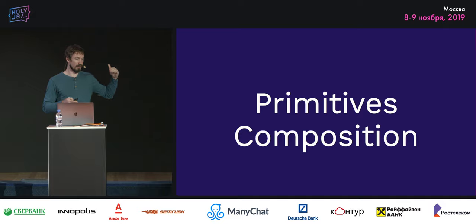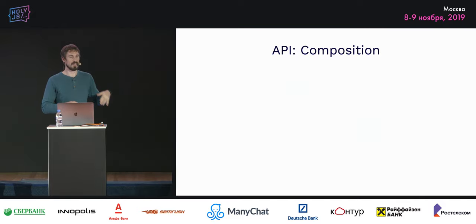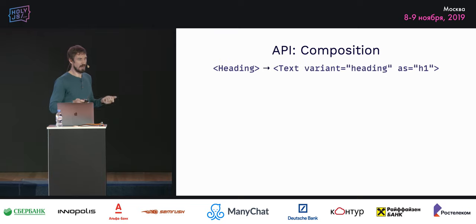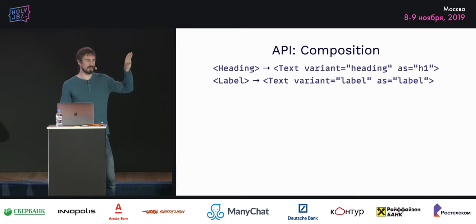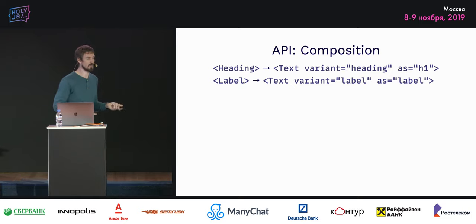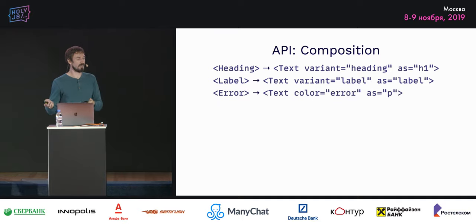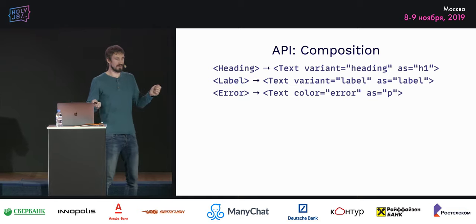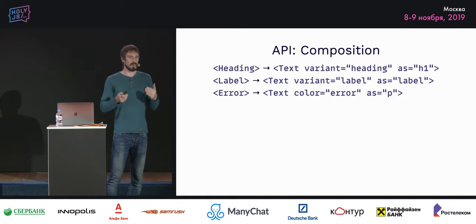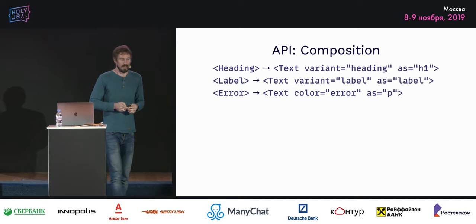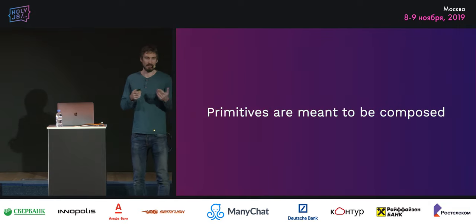The next step is composing further: take primitive components and compose more primitives out of them. We can create a Heading — just Text with variant 'heading' as h1. A Label is Text with variant 'label' as label. An Error is Text with color 'error' as a paragraph. You define all these variants inside your Text component to control them from one place. That's the basic principle of composition — React encourages building UI through composition, not inheritance.